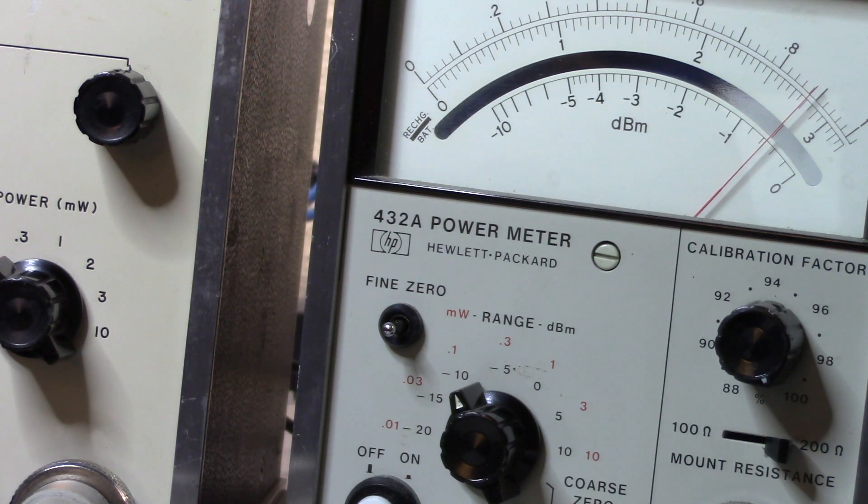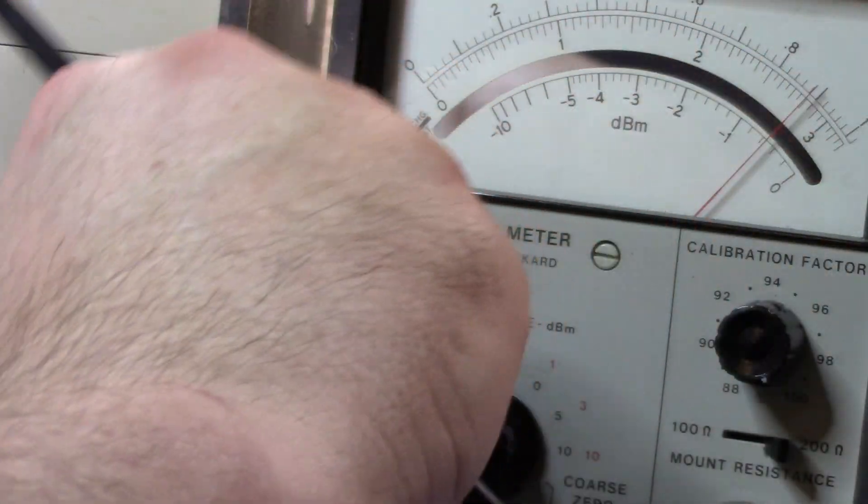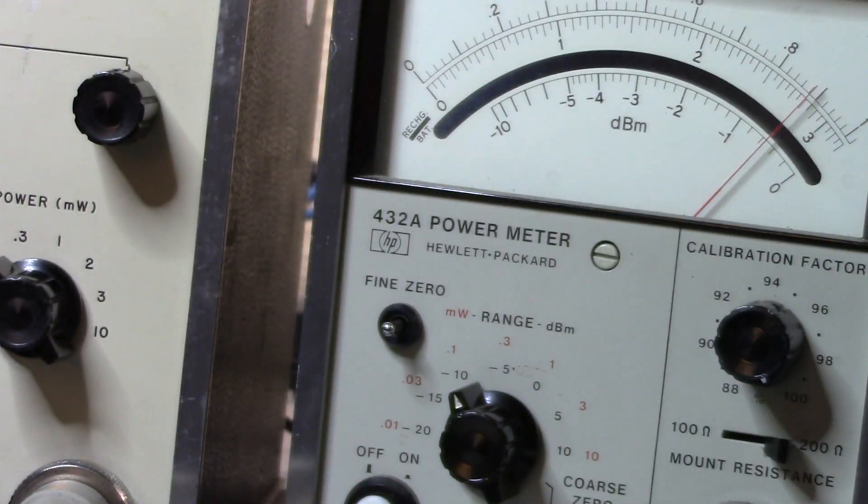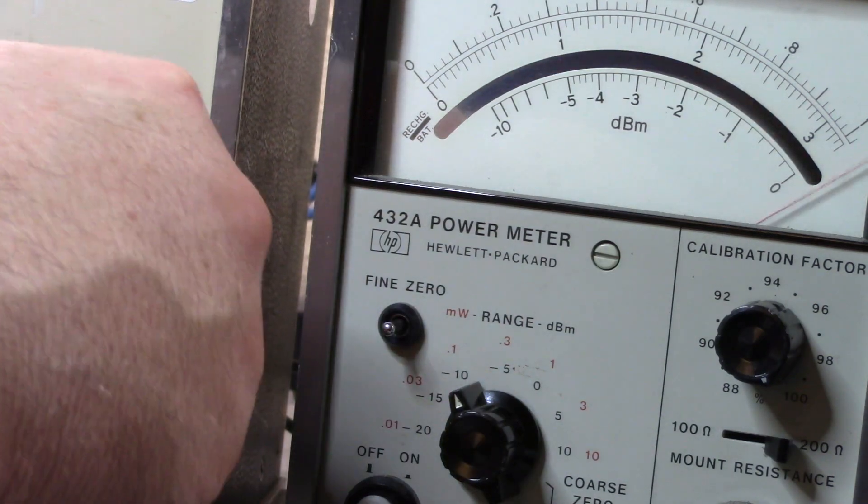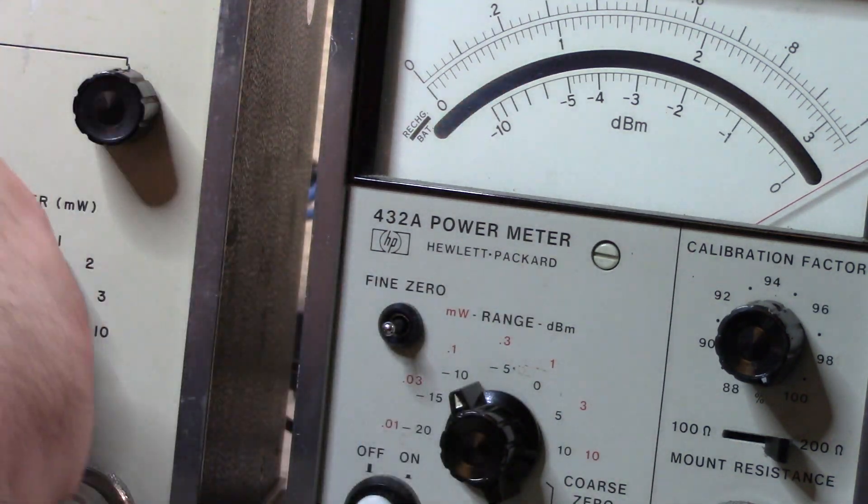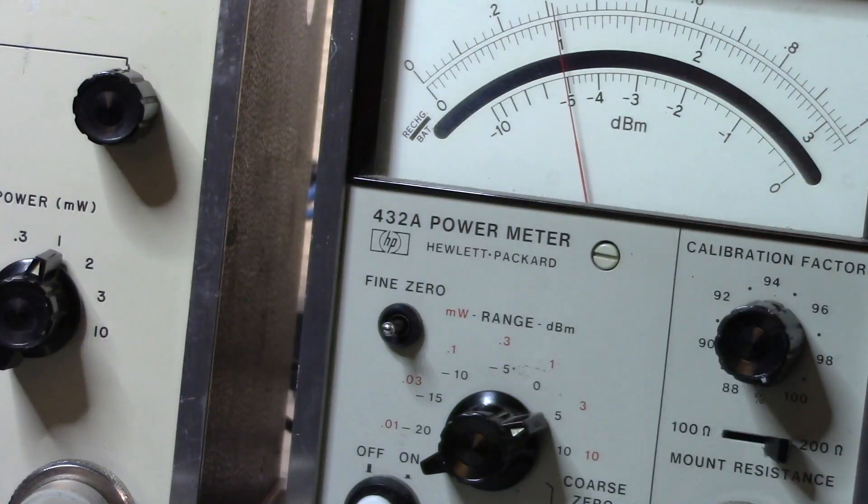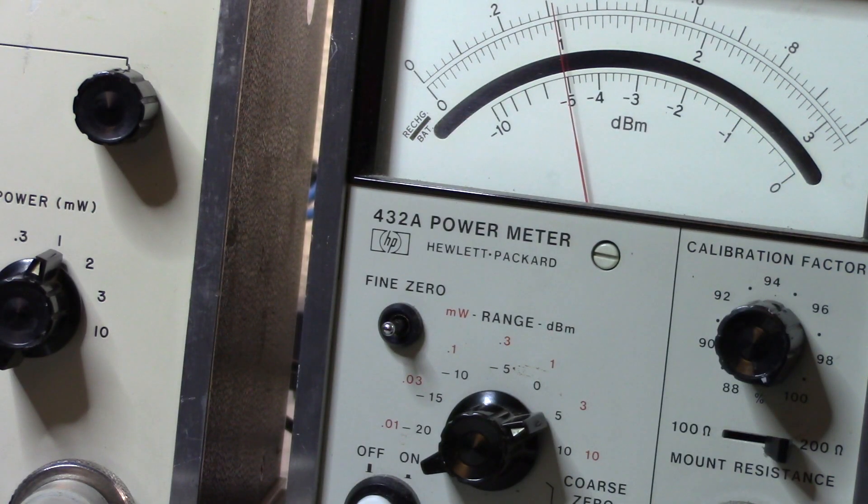We want to do meter linearity now and basically that's going to tell us that we're correctly being linear across the range of our meter. Set that to one milliwatt, function 200 and test, and set this to three milliwatts, mount resistance 200.